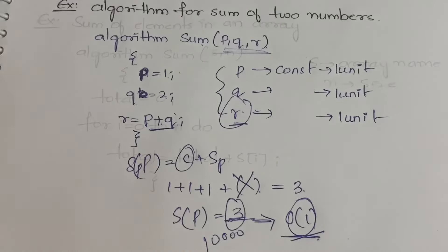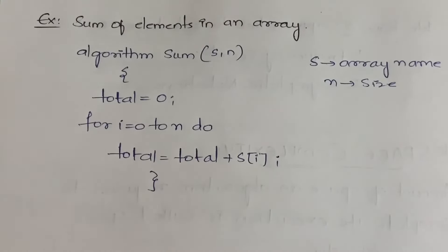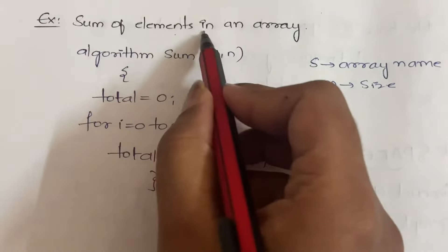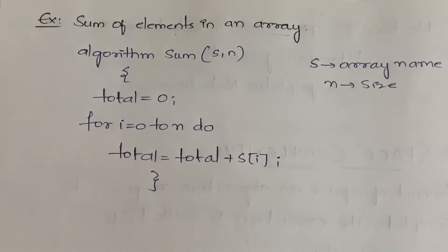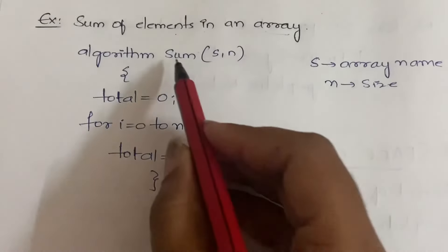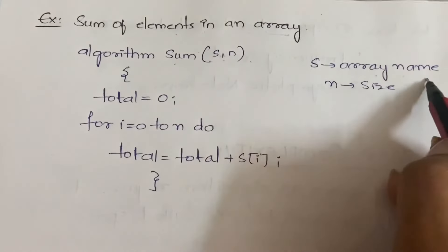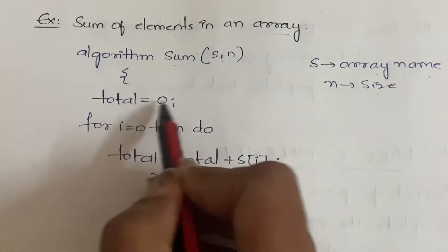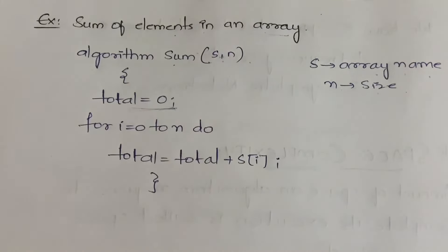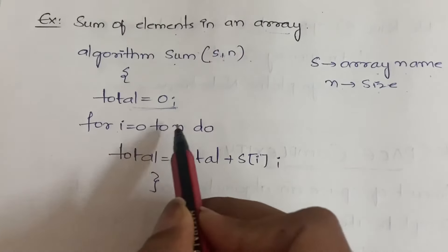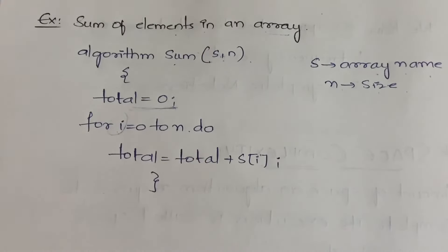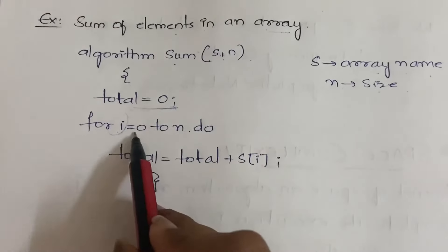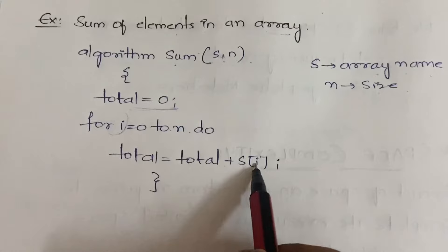Now let us see the second example. This example is also about calculating the sum of elements, but here we are calculating the sum of elements present in an array — not just two or three fixed elements. The algorithm is sum(s, n), where s is the array name and n is the size of the array. Total is initialized to 0, and from i = 0 to n, we do total = total + s[i].